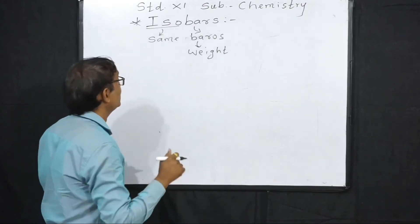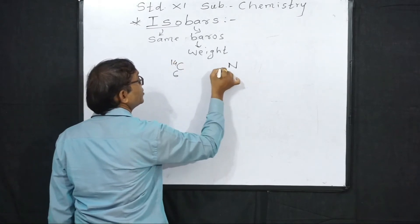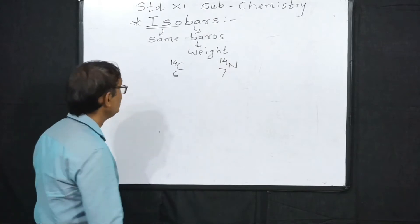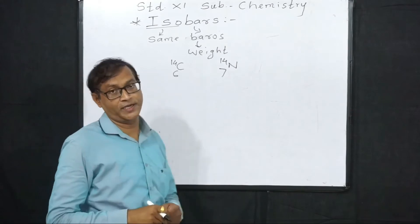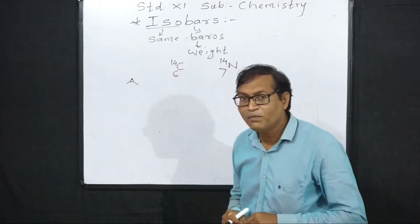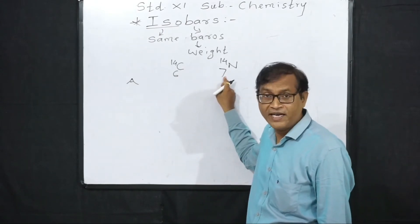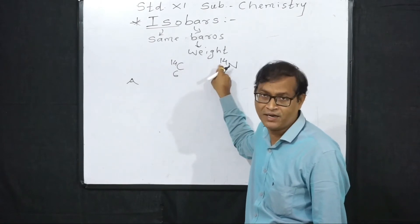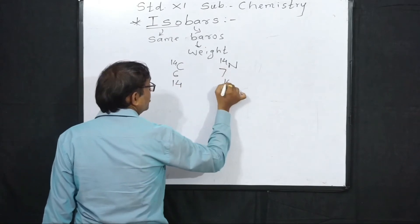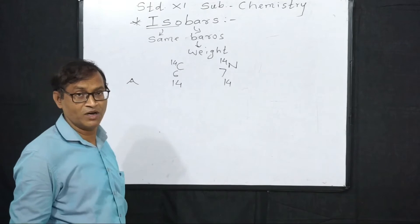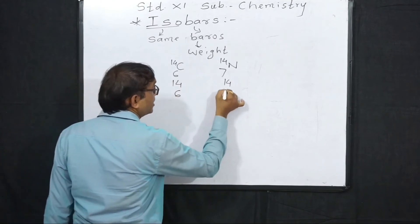Let us consider an example: Carbon-6-14 and Nitrogen-7-14. What about mass numbers here? Mass number is denoted by capital A, atomic number denoted by capital Z. The bottom is atomic number and the top is mass number. Here the mass number is 14, nitrogen is 14, means both mass numbers are the same. Atomic number here is 6 and here is 7.